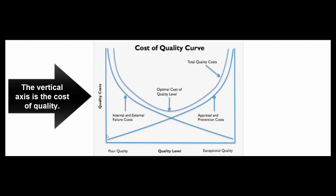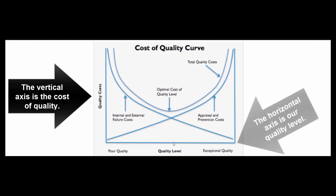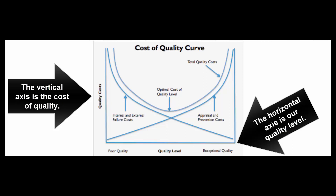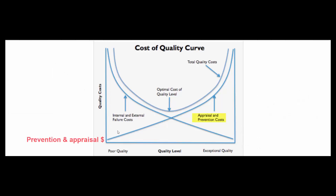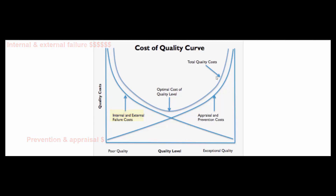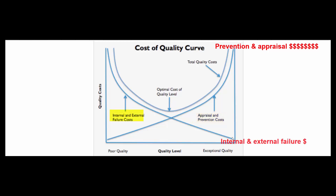Along this vertical axis are the quality costs, and along the horizontal axis is the quality of our product. So if we spend very little money on appraisal and prevention — if we're down at this part of the graph — we're going to have huge internal and external failure costs. On the other hand, if we spend a fortune on appraisal and prevention, we're going to have very few internal and external failure costs.